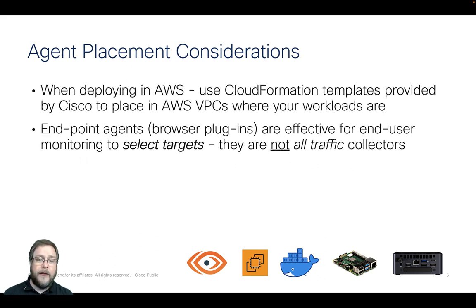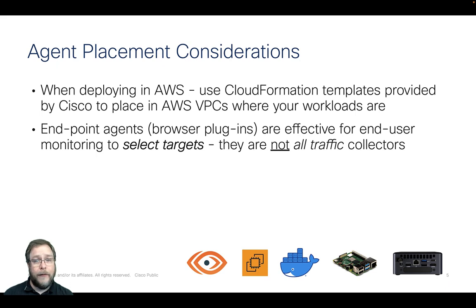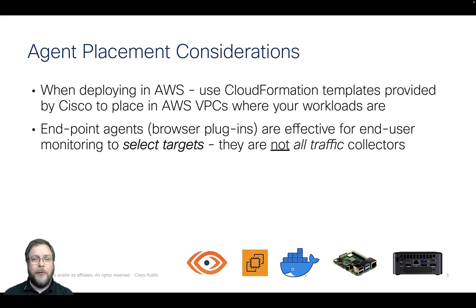When deploying in AWS, use the CloudFormation template because it's provided by Cisco. You don't have to go build an EC2 instance with Ubuntu, get the operating system installed and configured, and then install the Linux package. You can do that if you already have an EC2 instance running Ubuntu or Red Hat and want to add the ThousandEyes agent to it. But if you're deploying a single instance purpose-built for ThousandEyes agent monitoring, just use the CloudFormation template — it handles all installation including security group settings.